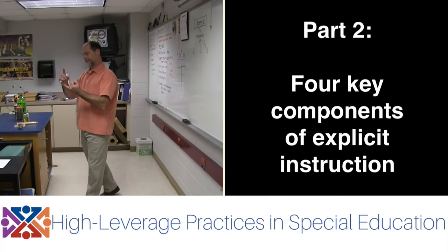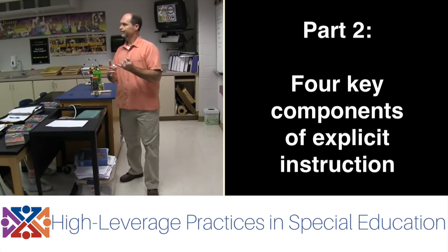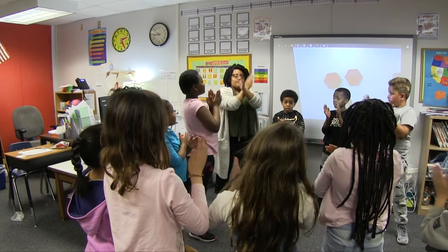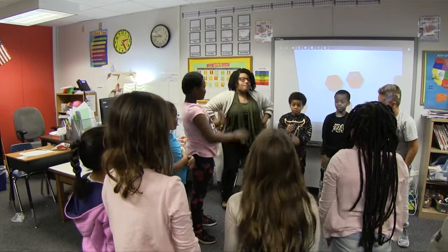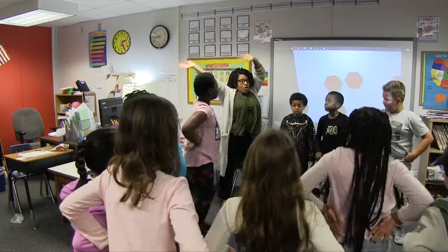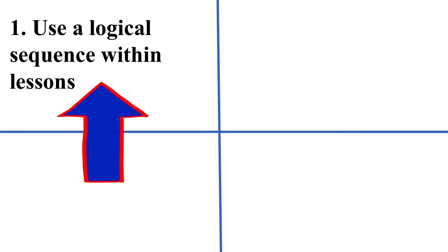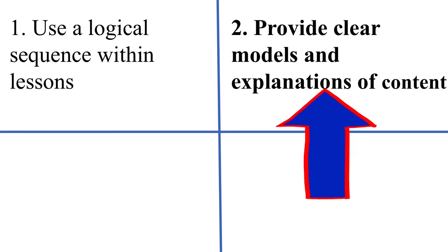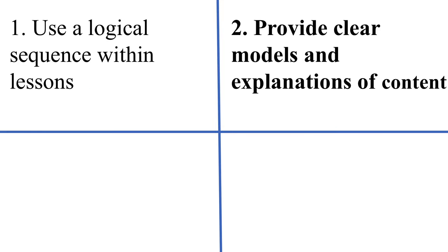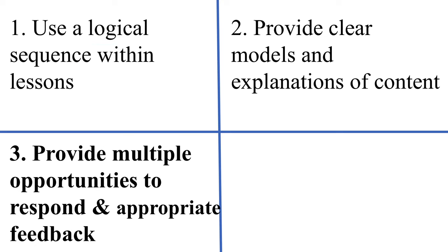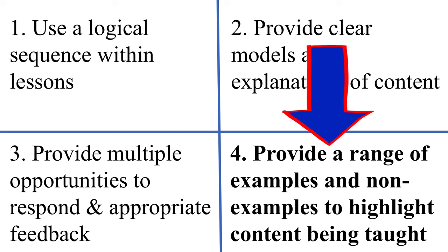In Part 2, we focus on four key components of Explicit Instruction. Component 1: Use a logical sequence within lessons. Component 2: Provide clear models and explanations of content. Component 3: Provide multiple opportunities to respond and appropriate feedback on performance. Component 4: Provide a range of examples and non-examples to highlight content being taught.